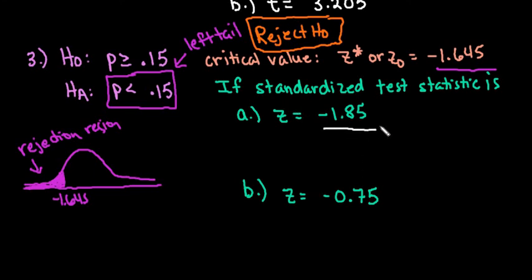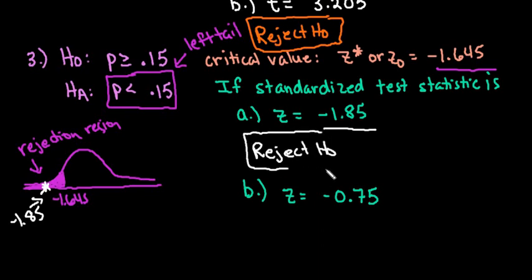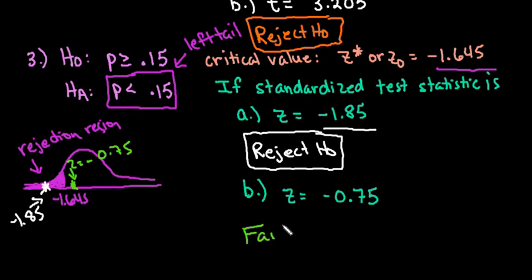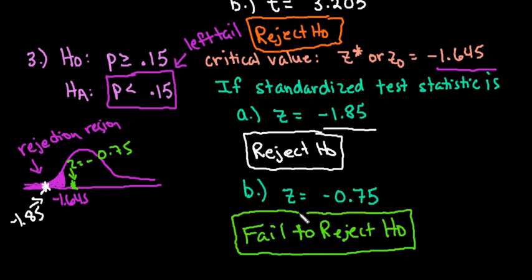The standardized test statistic calculated using the one proportion Z test formula is Z = -1.85. Since -1.85 falls to the left of -1.645 on the number line, it is in the rejection region — we reject the null hypothesis. For the last one, Z = -0.75 falls to the right of -1.645, so we fail to reject the null hypothesis. Remember, in hypothesis testing you either reject the null or fail to reject the null — we never make a conclusion based solely on the alternative.